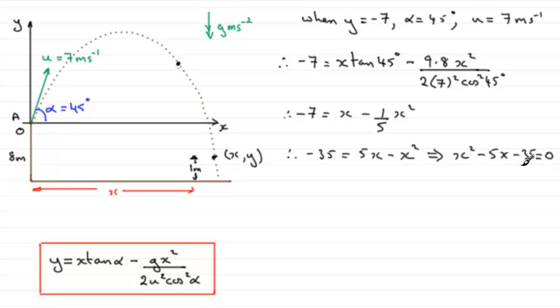So to solve this quadratic equation, I'd want to first of all see if it factorizes, but it doesn't. So I'm going to need to use the quadratic formula. I'm assuming that you're happy with that. X equals minus B plus or minus square root of B squared minus 4AC all over 2A, where A is 1, B is minus 5, and C is the minus 35.